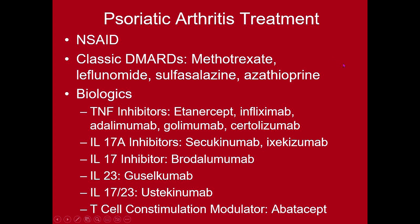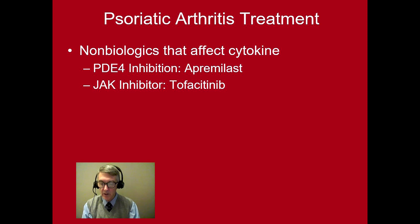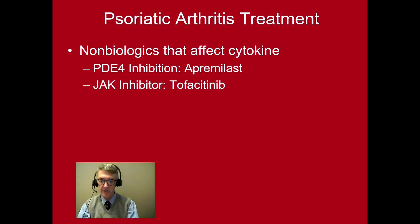The brand names are: Etanercept is Enbrel, Infliximab is Remicade with a generic equivalent Inflectra, Adalimumab is Humira, Golimumab is Simponi, and Certolizumab is Cimzia. Secukinumab is Cosentyx, Ixekizumab is Taltz, and Brodalumab is Siliq. There are also medicines that affect cytokine function but are not biologics — Apremilast or Otezla is a PDE-4 inhibitor; by inhibiting PDE-4 and cyclic AMP production, the cytokines IL-17F, IL-17A, IL-22, and TNF-alpha are decreased, making it helpful in psoriasis and psoriatic arthritis.